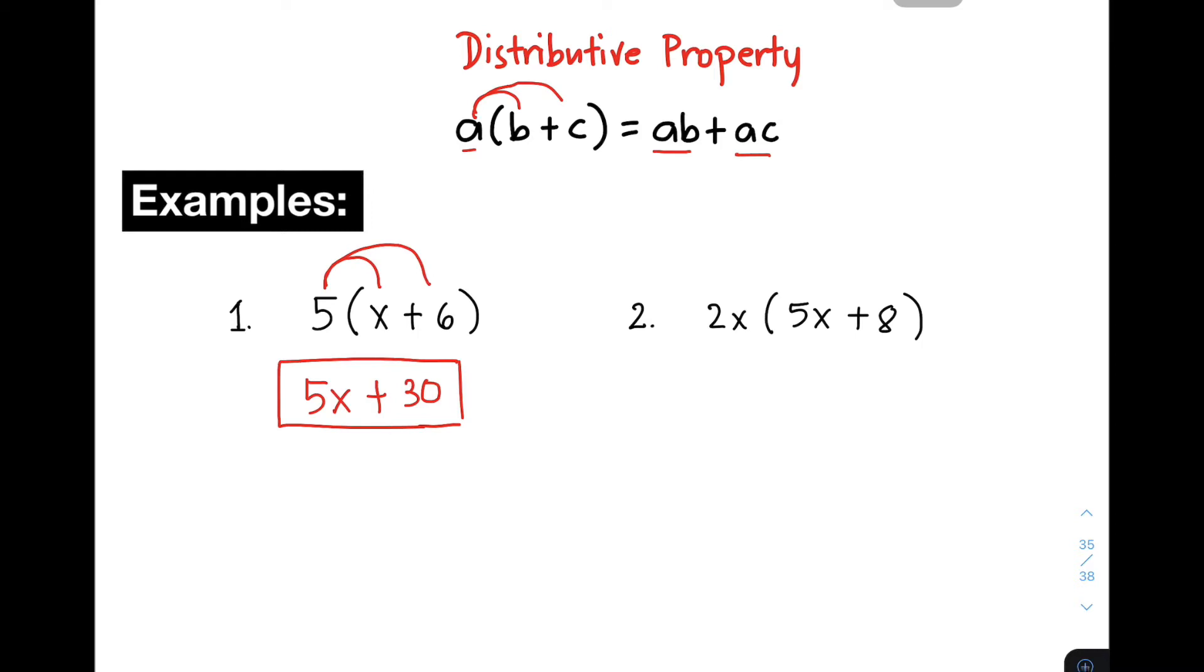Now let's move on with item number 2. So we have here a monomial to be multiplied by a binomial. When we use the distributive property, it will become 2X times 5X. That will give you 10 for the number and for the variable X, X times X is equivalent to X squared. So 2X times 5X, the product is 10X squared. And then we need to distribute 2X to the other term. You have 2X times 8, it will give you 16 and then X. This is the answer for item number 2.